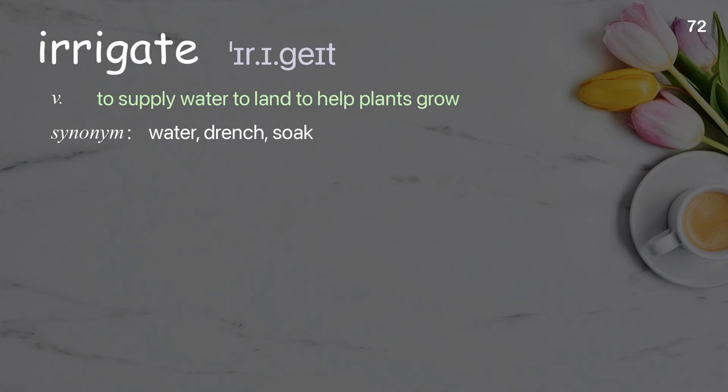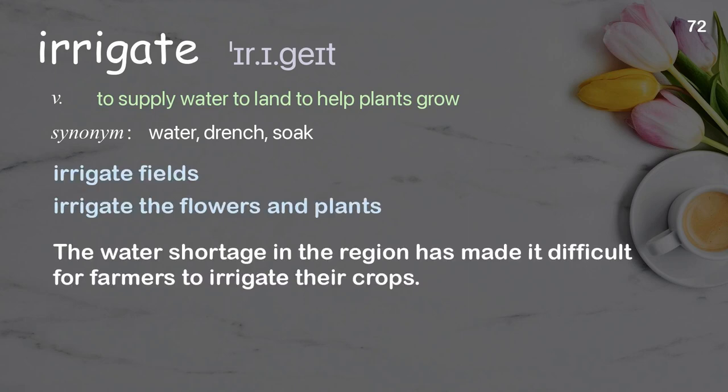Irrigate: To supply water to land to help plants grow. Examples: Irrigate fields, irrigate the flowers and plants. The water shortage in the region has made it difficult for farmers to irrigate their crops.